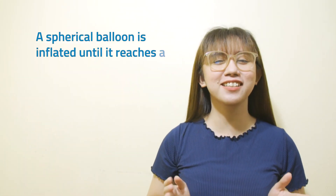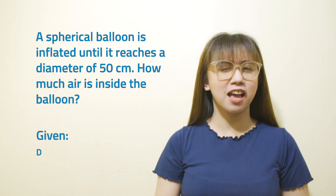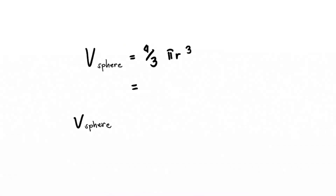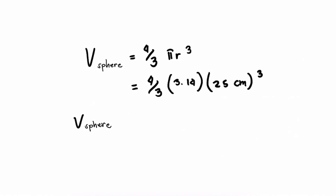A spherical balloon is inflated until it reaches a diameter of 50 centimeters. How much air is inside the balloon? Using the formula for the volume of a sphere: four-thirds times pi r cubed. Substituting: four-thirds times 3.14 times 25 centimeters raised to the third power. The amount of air inside the balloon is approximately 65,416.67 cubic centimeters.